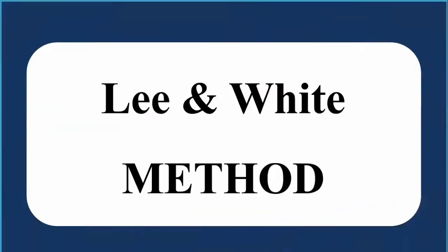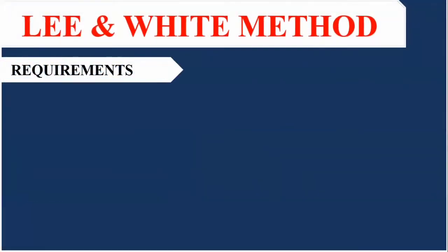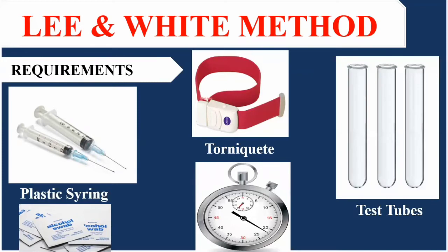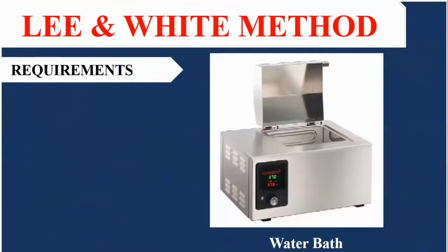The other method is the Lee and White method, also known as the test tube method and the venipuncture method. It requires the following: plastic syringes, alcohol swab, tourniquet, stopwatch, test tubes, an autoclave, and a water bath. The water bath is set to 37 degrees centigrade to provide a temperature matching that of the human body.